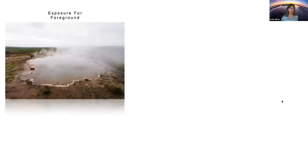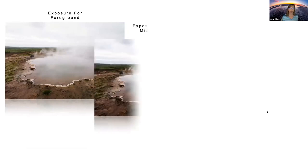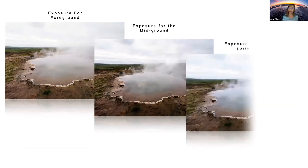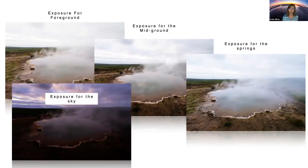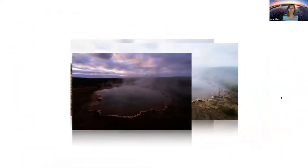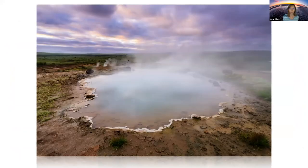Sometimes I want to expose for my foreground, an exposure for the mid-ground, one just for the springs, and one more just for the sky, and put all these together. Yes, Lightroom can merge these to HDR. But if I just want this one piece of the spring and not the surrounding area, that's not something Lightroom is going to be able to pick out. So I have to bring that into Photoshop and manually blend those bits and pieces together to get exactly what I want.